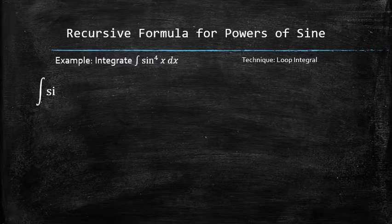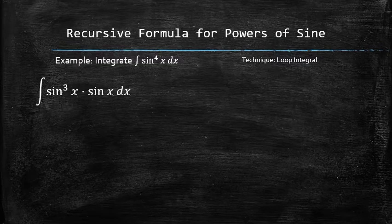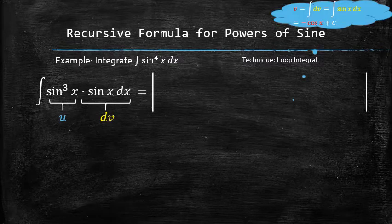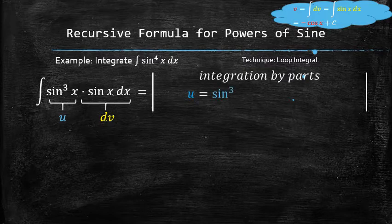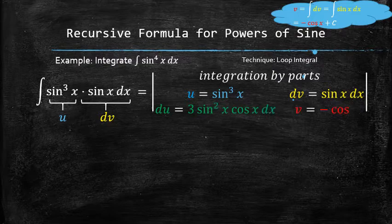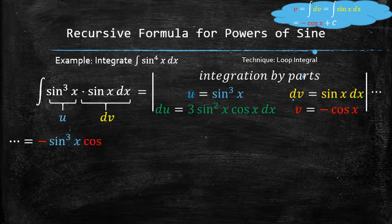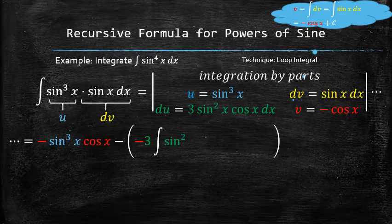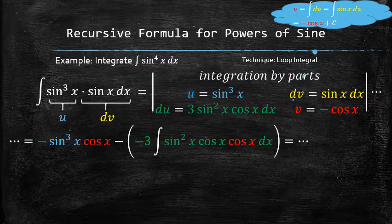We rewrite the integrand and choose u and dv, then integrate by parts by differentiating u to find du and integrating dv to find v. We apply the formula and combine the like terms to produce a new integral.